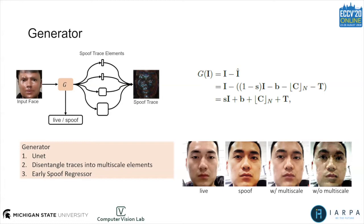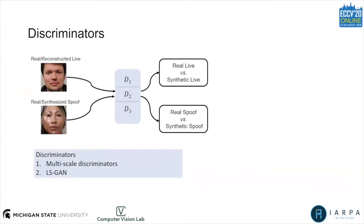The model using multiscale representation contains significantly fewer artifacts compared to the one not using it. In the bottleneck of the generator, we use additional layers to predict a binary map to represent live or spoof. For the discriminator, we also adopt the multiscale mechanism. We introduce three discriminators, D1, D2, and D3, working at three different face resolutions.